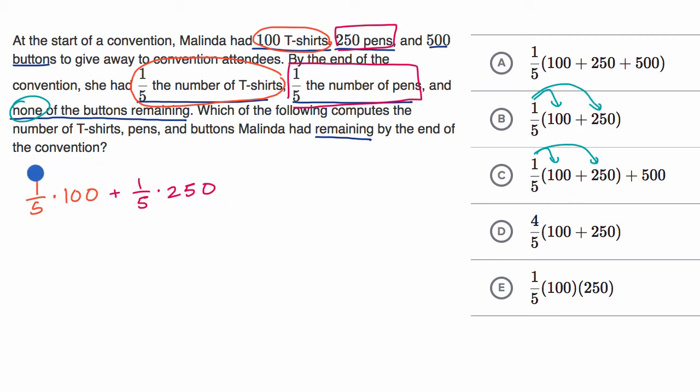So if we factor out one-fifth, this is going to be the same thing as one-fifth times 100 plus 250. Plus 250, which we can immediately see is choice B.